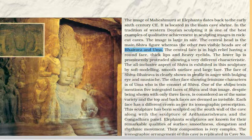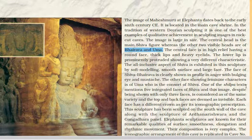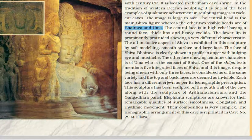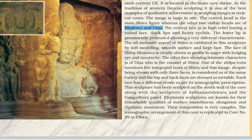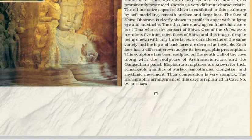The all-inclusive aspects of Shiva are exhibited in the sculpture through soft modeling, smooth surface, and large face. The face of Shiva Bhairava is clearly shown in profile at an angle with a bulging eye and mustache, and the other face showing feminine characters is of Uma, the consort of Shiva. One of the Shilpa texts mentions five integrated faces of Shiva, and this image, despite being shown with only three faces, is considered of the same variety — the top and back faces are deemed invisible. Each face has a different crown as per its iconographic prescriptions. This sculpture is sculpted on the south wall of the cave along with sculptures of the Ardhanarinareshwara and the Gandhara panel. Elephanta sculptures are known for remarkable surface quality, smoothness, elongation, and rhythmic movement. The iconographic arrangement of this cave is replicated in cave number 29 of Ellora.